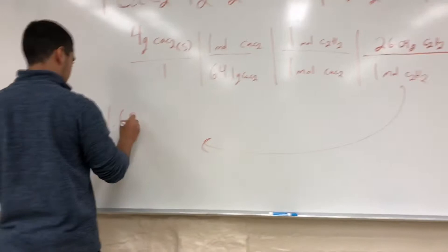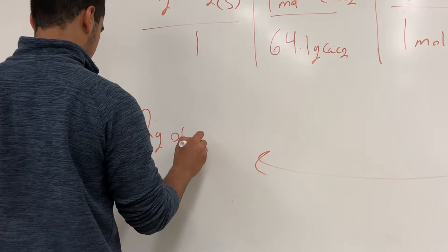And finally, using all those calculations, our theoretical yield is 1.62 grams of acetylene gas.